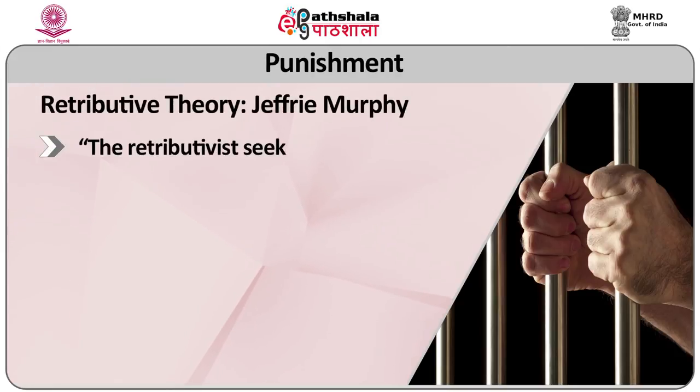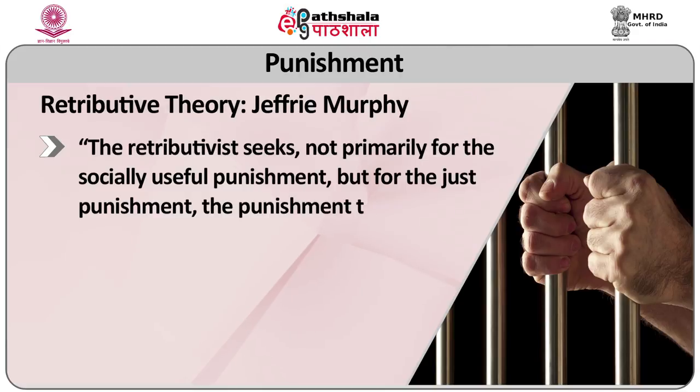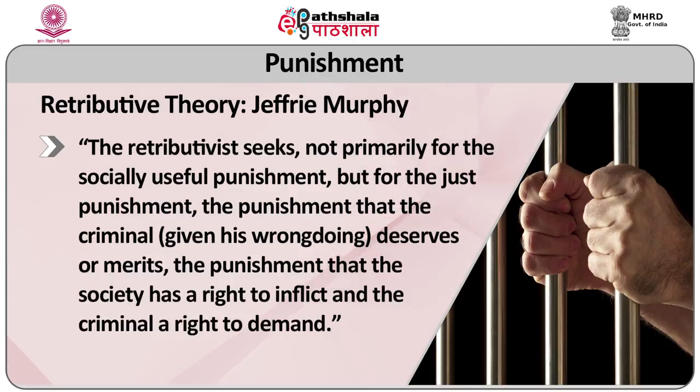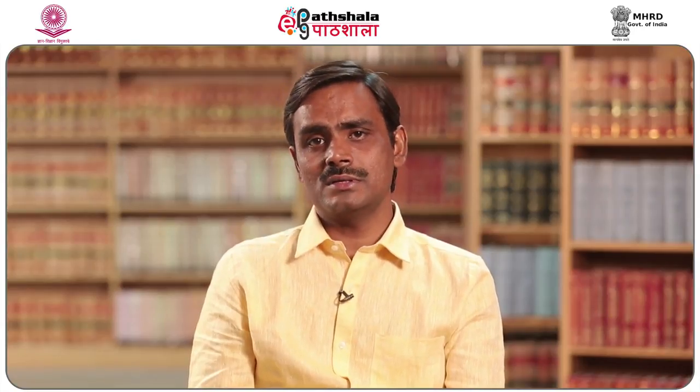To conclude the discussion on retributive theory, it can be said, quoting Geoffrey Murphy, that the retributivist seeks not primarily for the socially useful punishment, but for the just punishment — the punishment that the criminal, given his wrongdoing, deserves or merits, the punishment that society has a right to inflict and the criminal a right to demand. Retributivism justifies punishment in terms not of its contingently beneficial effects, but of its intrinsic justice as a response to crime. The justification relationship holds between the present punishment and the past crime, not between present punishment and future effects.